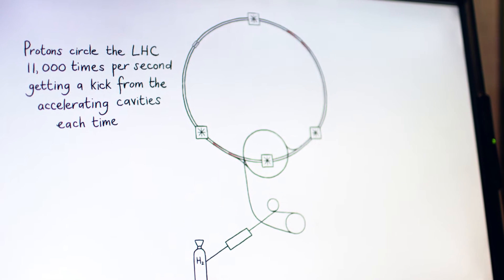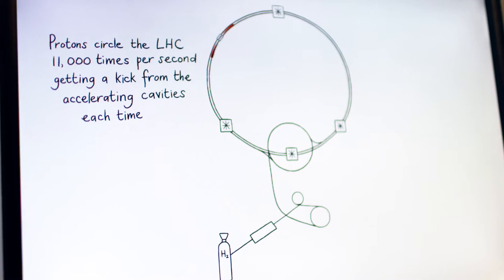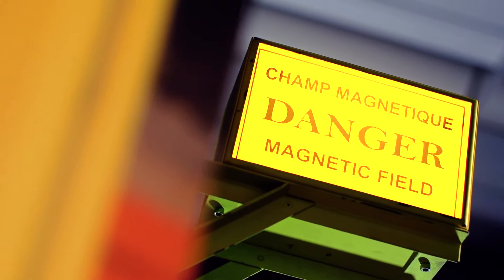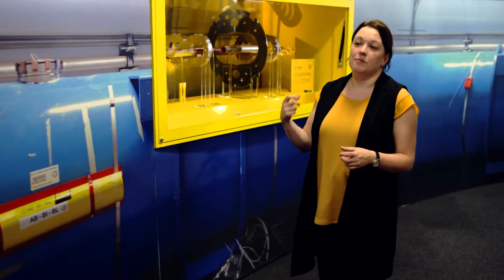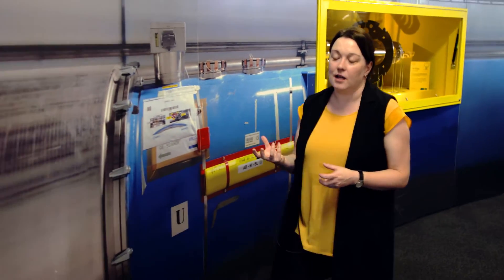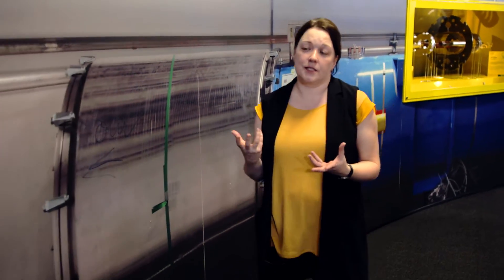The reason you have such a big tunnel is that you need a big circle to keep the particles going around inside their magnetic fields. Inside these blue tubes with their cooling system are the LHC magnets themselves, and those magnet systems actually contain two beam pipes, not one.